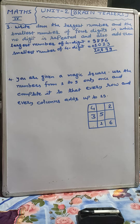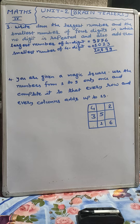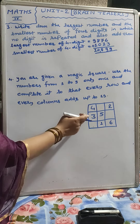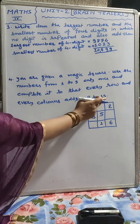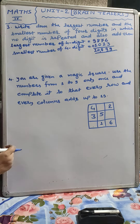Now question number 4. You are given a magic square. Use the numbers from 1 to 9 only once and complete it so that every row and every column adds up to 15.